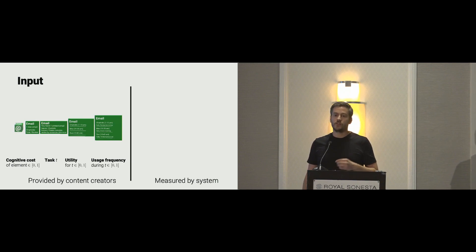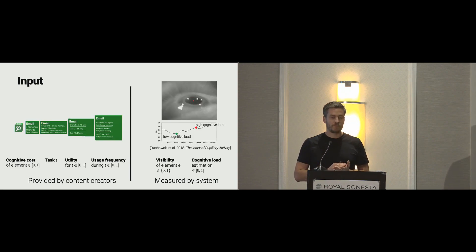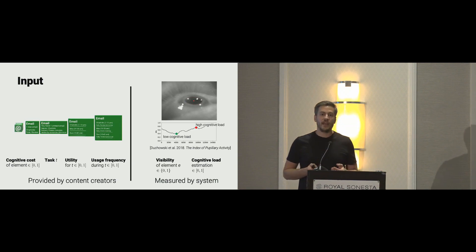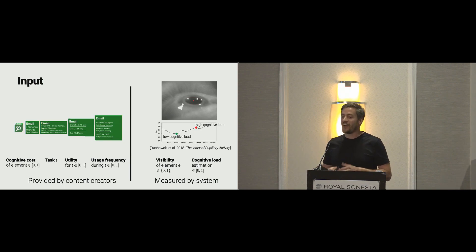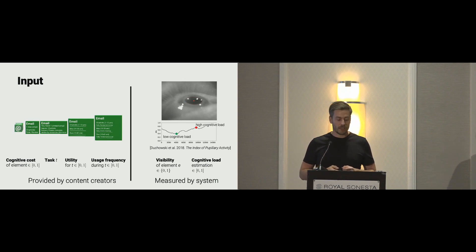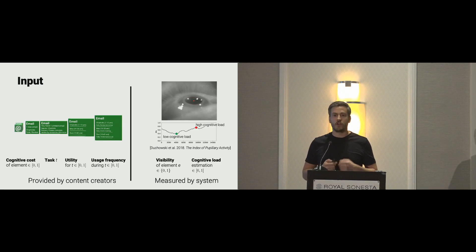The second part is measured by the system. We geometrically measure whether elements are actually visible to users, and we estimate cognitive load. We build on the work by Dukovsky and colleagues on the Index of Pupillary Activity. The IPA is essentially the frequency of meaningful pupil dilations, which is correlated with cognitive load — higher frequency of meaningful pupil dilation corresponds to higher cognitive load, and the same holds for low cognitive load. In our approach, this could also be replaced by other methods if they are found to be more reliable.